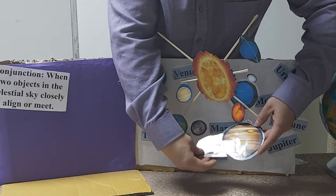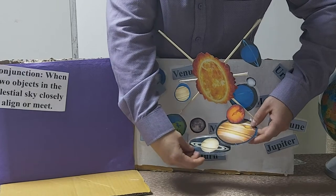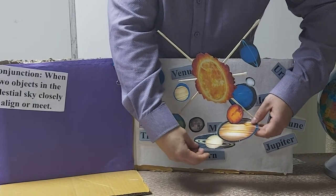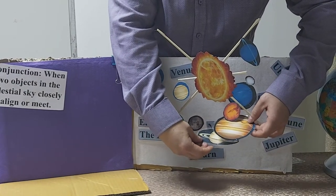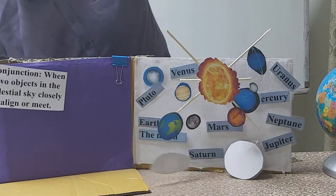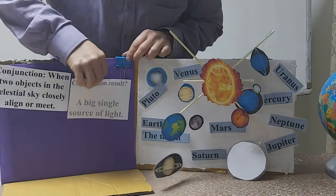Now when Saturn went behind it, like this, they met. And this is what a conjunction is. When they meet like this, it becomes, it creates this, what? This big single source of light.